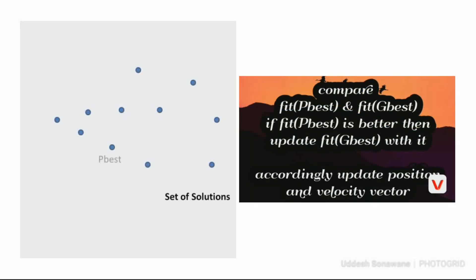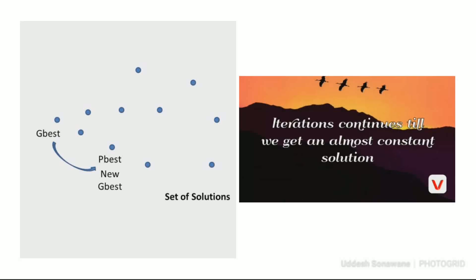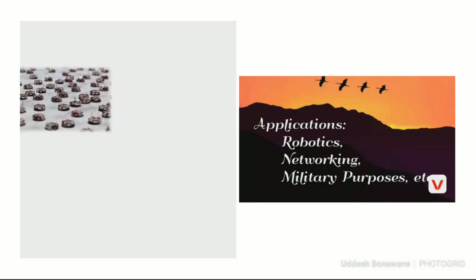Compare fitness of PBEST and fitness of GBEST. If fitness of PBEST is better, then update fitness of GBEST with it. Accordingly, update position vector and velocity vector. Iteration continues till we get an almost constant solution.